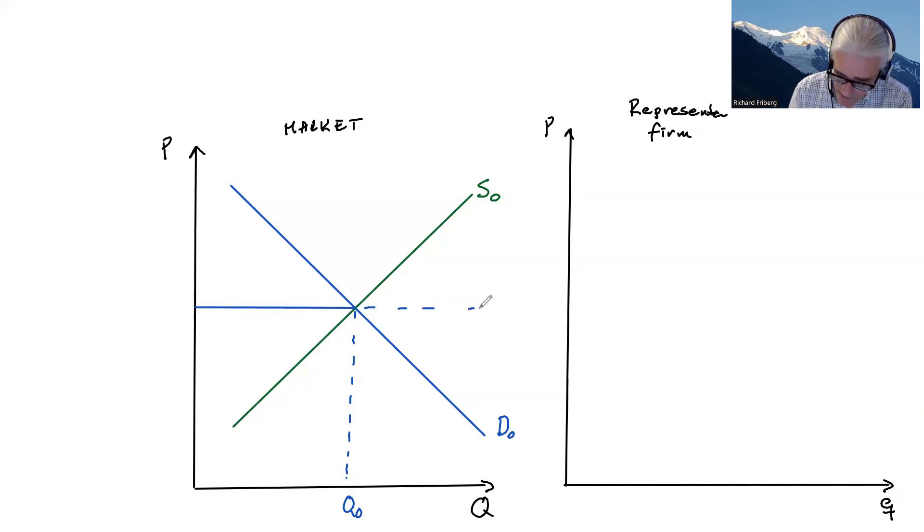And importantly, we can travel out here to the individual firm that's also going to be facing this market level price of P0. So if there's zero profits, what do we know? We know that the firm, the representative firm, is indeed making zero profits.